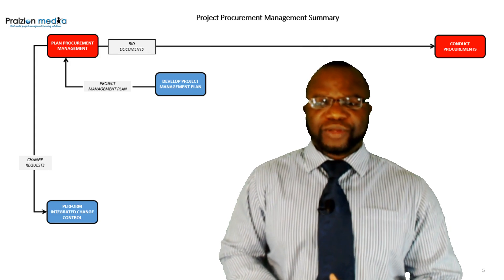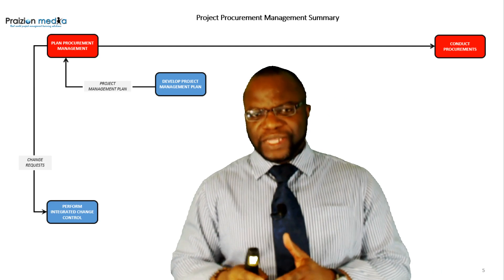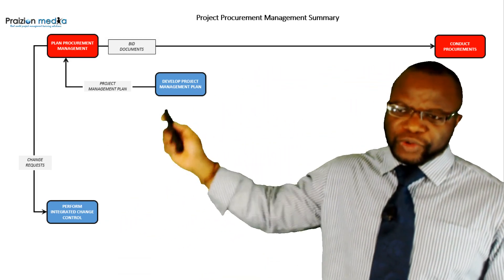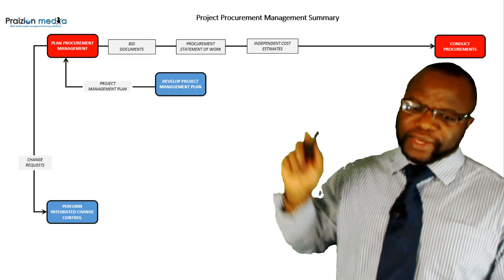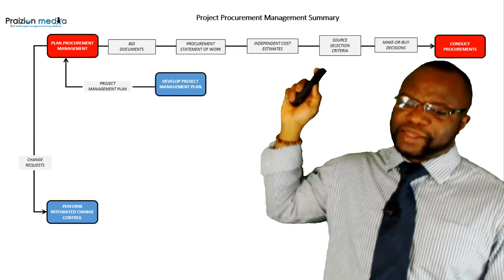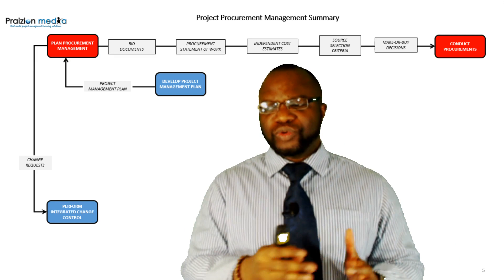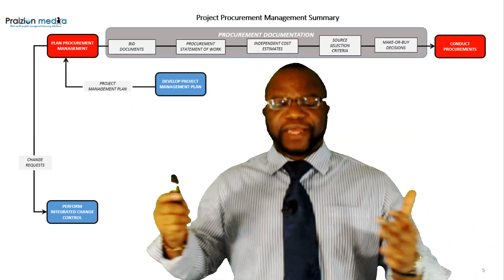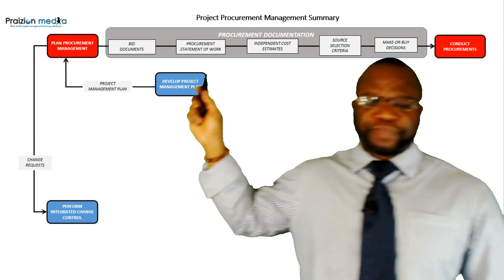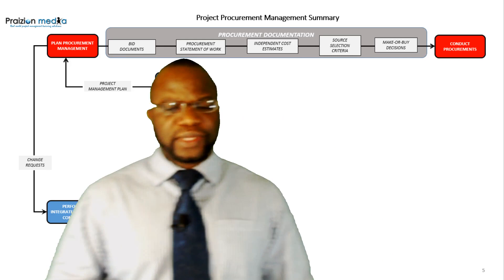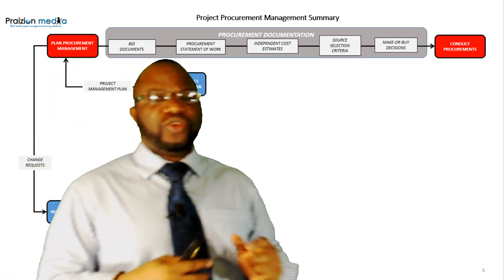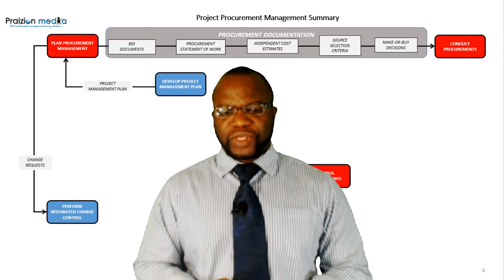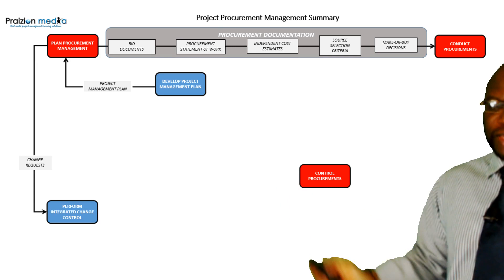If you do not pay close attention to those seven outputs and you're not tracking each one, it's easy to miss these connections. That's why in this solution I show you: the bid documents, the procurement statement of work, the independent cost estimates, the source selection criteria, and the make-or-buy decisions — they are all going to Conduct Procurements. I look at all of these together as procurement documentation. This type of relationship you typically don't pay attention to while reading the PMBOK guide, but in this curriculum I call it out for you.